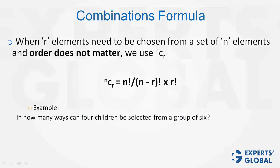In how many ways can 4 children be selected from a group of 6? It's like forming a team. The order does not matter. We use 6C4. This turns out to be 6 factorial divided by 4 factorial times 2 factorial equals 15.